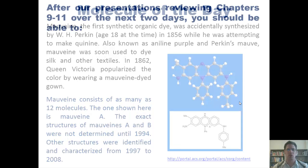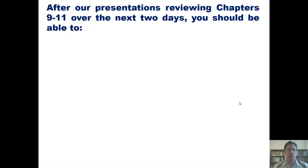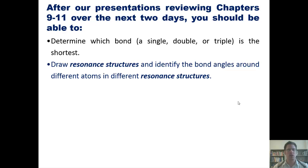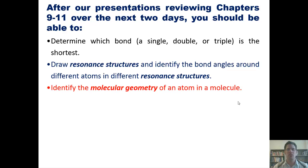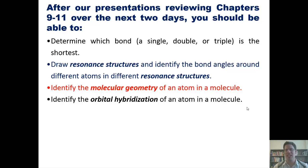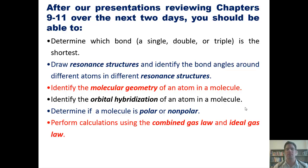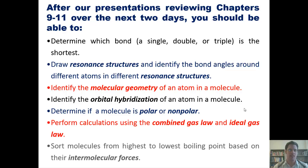After this series of lectures from Special Topics 3 reviewing chapters 9 through 11, you guys should be able to: first, determine which bond — single, double, or triple — is the shortest. Second, draw resonance structures and identify the bond angles around different atoms in different resonance structures. Third, identify the molecular geometry of an atom in a molecule. Fourth, identify the orbital hybridization of an atom in a molecule. Fifth, determine if a molecule is polar or non-polar. Sixth, perform calculations using the combined gas law and ideal gas law. And seventh, sort molecules from highest to lowest boiling point based on their intermolecular forces.